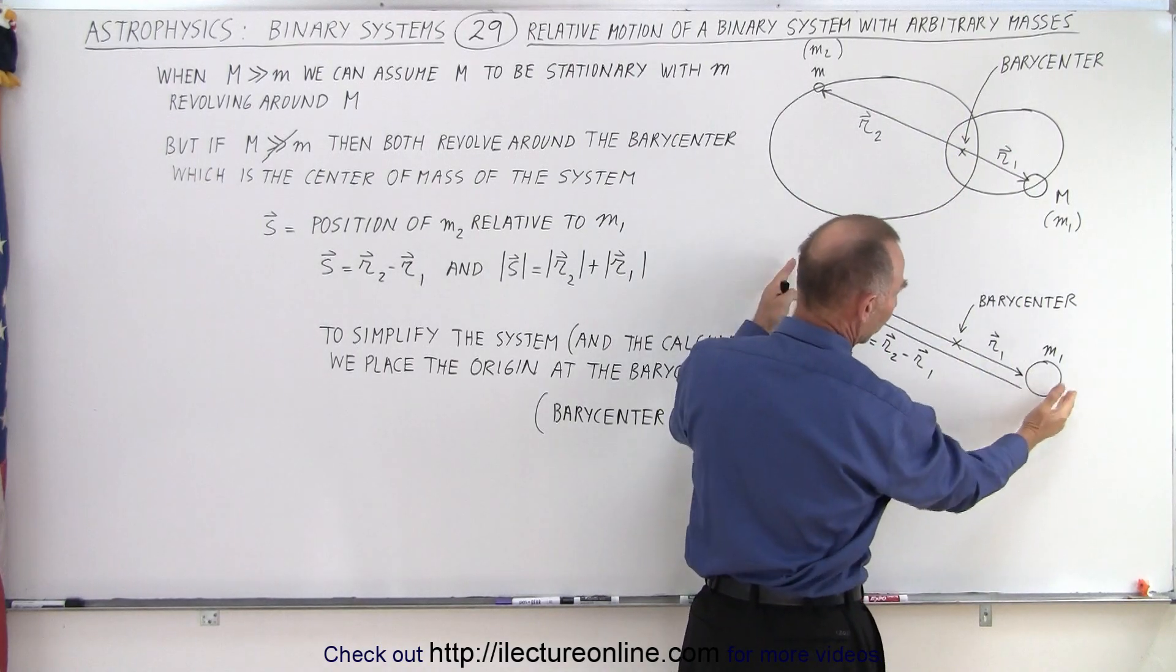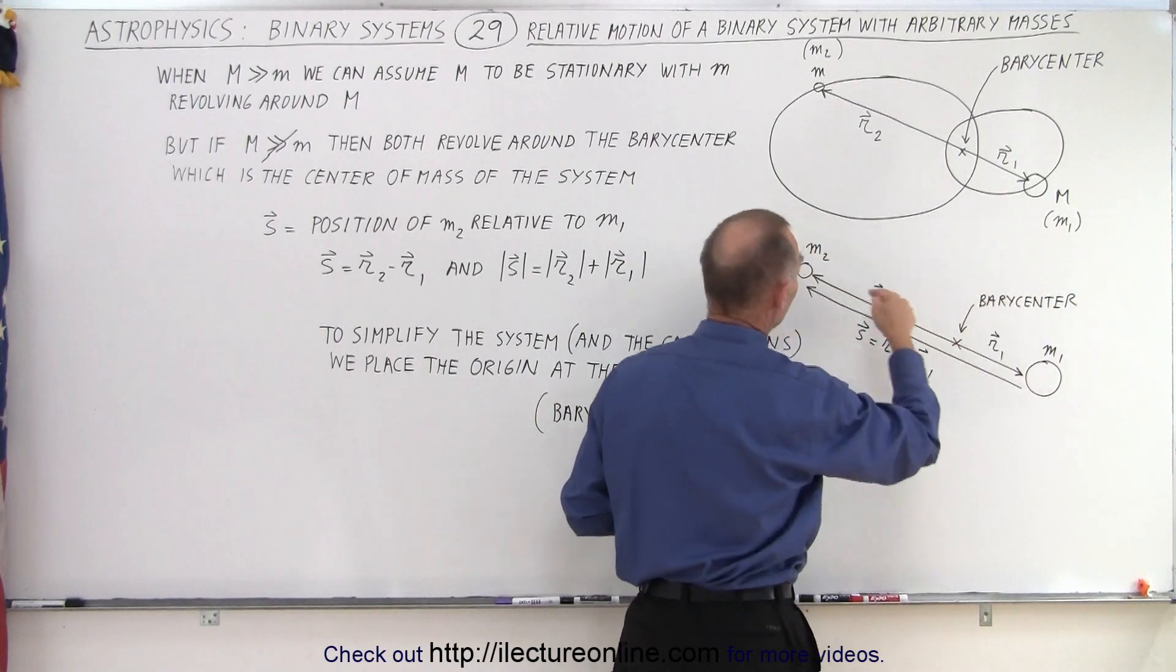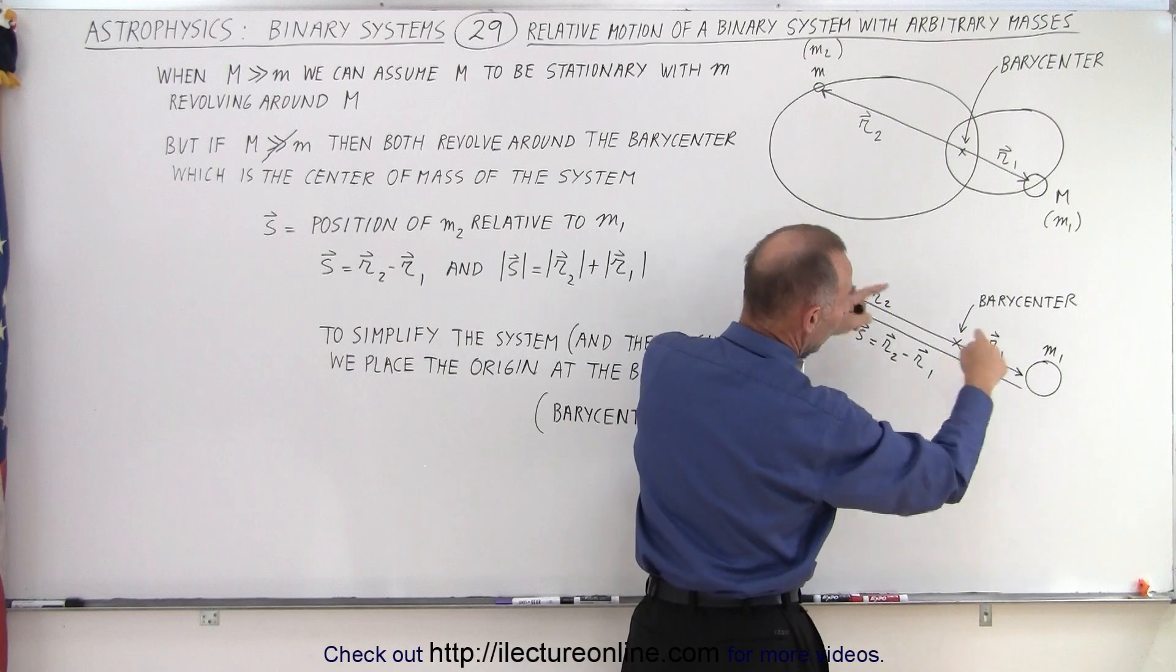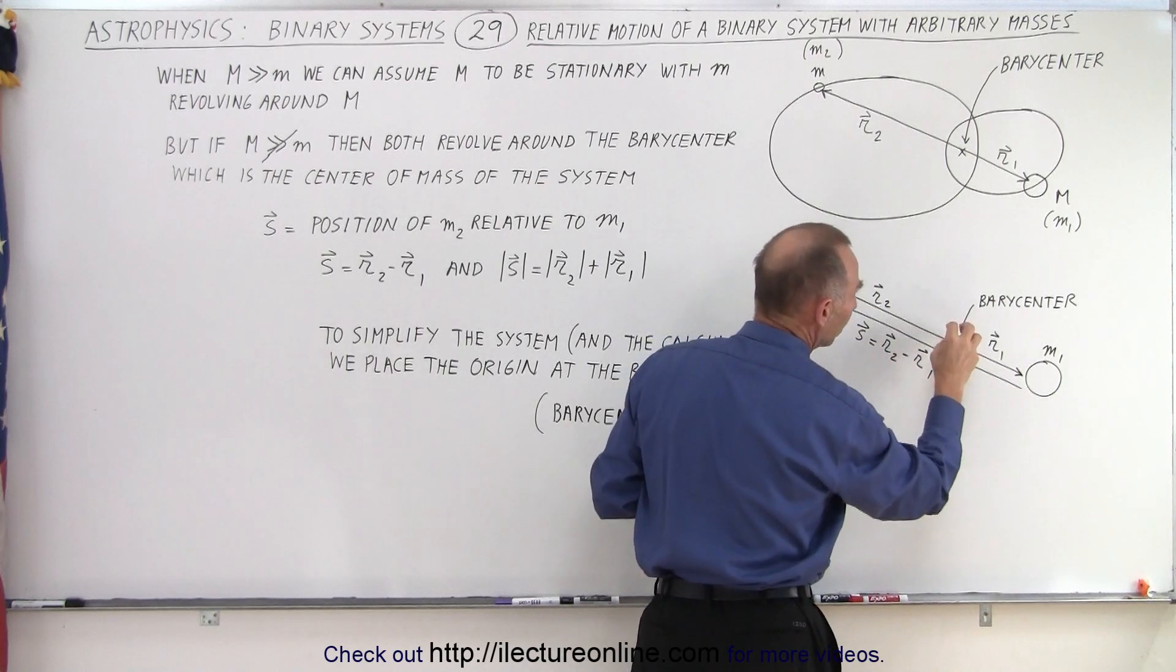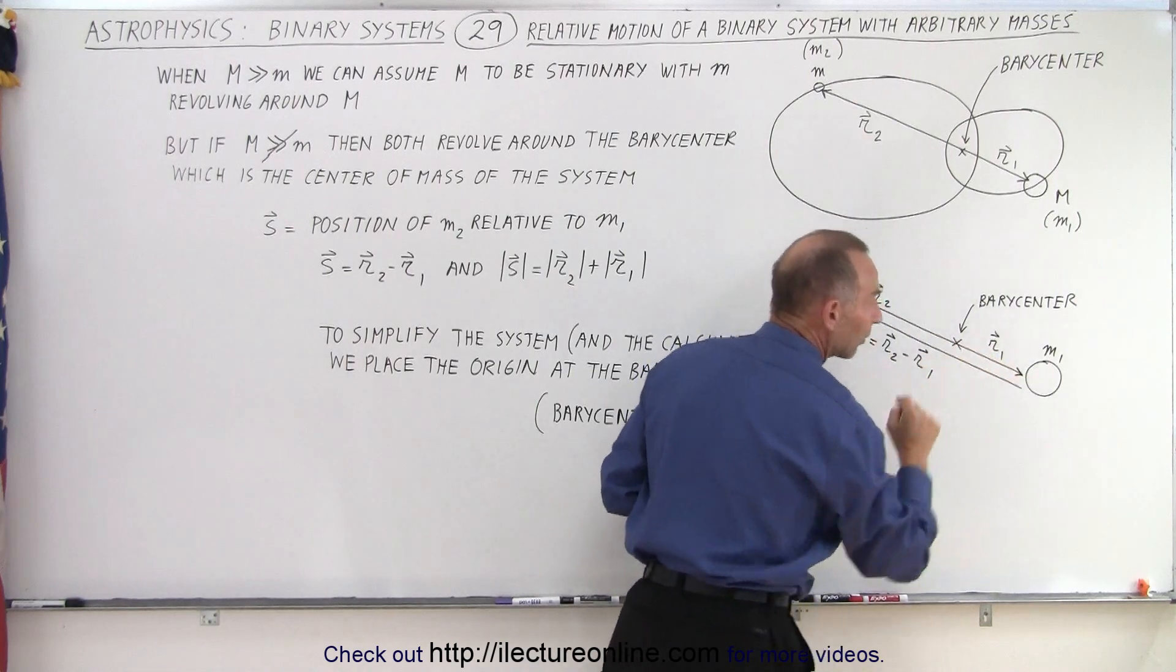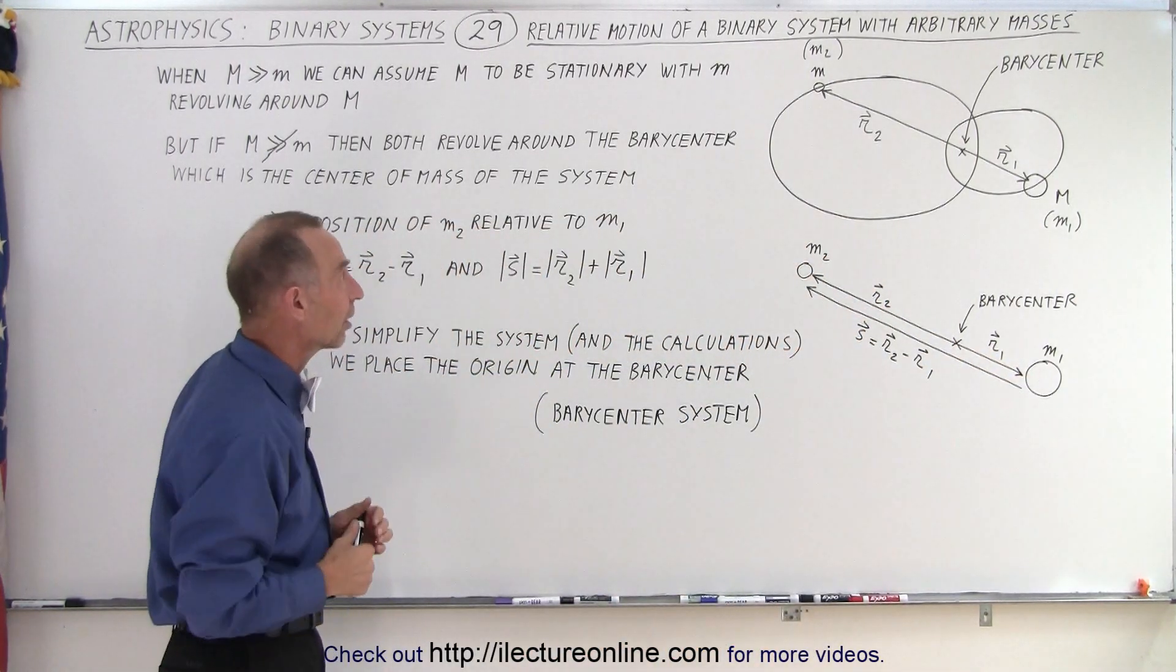But typically we have more of a case like this, where the large object, the sun, goes around the barycenter, and the small object goes around the barycenter as well, so that they both go around a common point, the barycenter or the center mass, rather than around the large object. So we're going to start developing our equations using that concept.